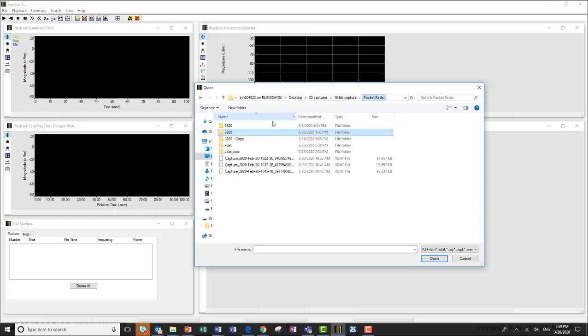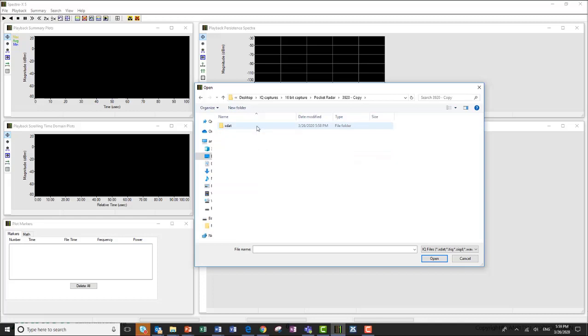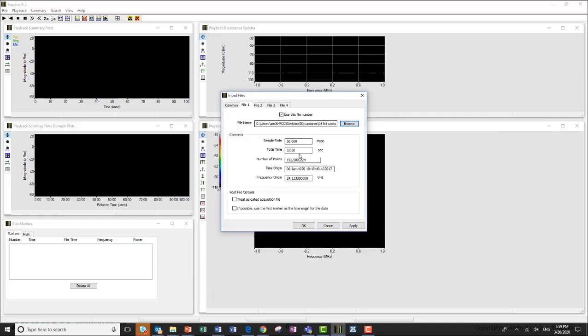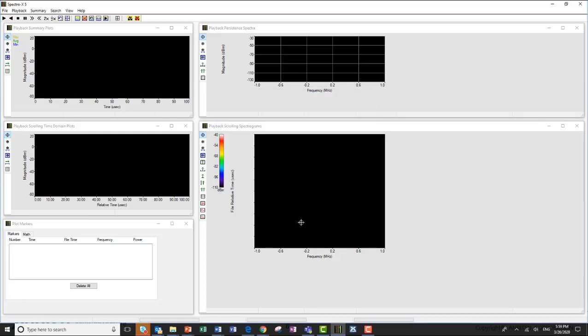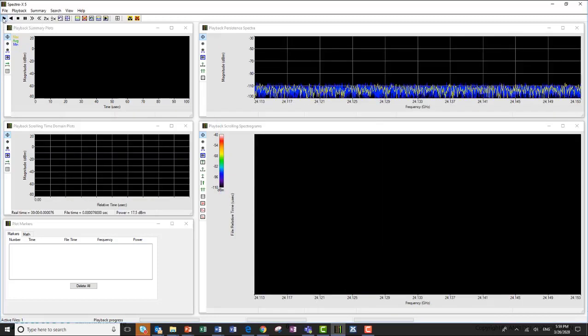Then I come in here, select my input file, browse through here, and come into this file to get my XDAT file that was created. I can open that up. It reads all of the information, and then I can start to play it back.